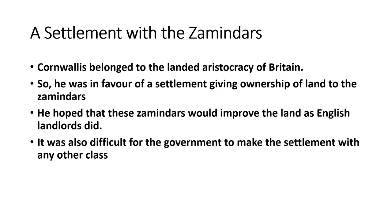These were the merits Lord Cornwallis saw, which is why he introduced the Permanent Land Revenue System of Settlement in Bengal, Bihar and Orissa in 1793. With whom did Lord Cornwallis make this settlement? Since Lord Cornwallis himself belonged to the landed aristocracy in Britain, he wanted to settle with the Zamindars. The word 'Zamindar' originated from Persian — 'zamin' means land, 'dar' means holder, so Zamindar literally means holder of land.